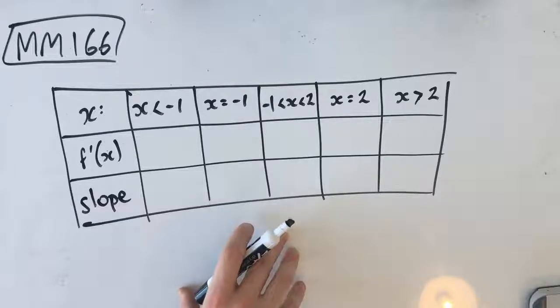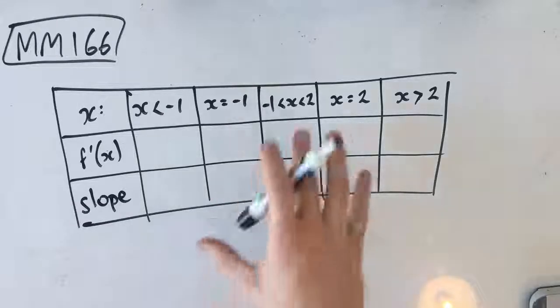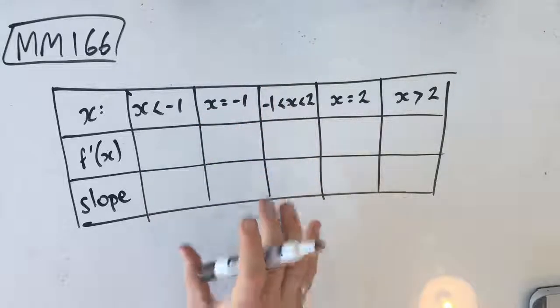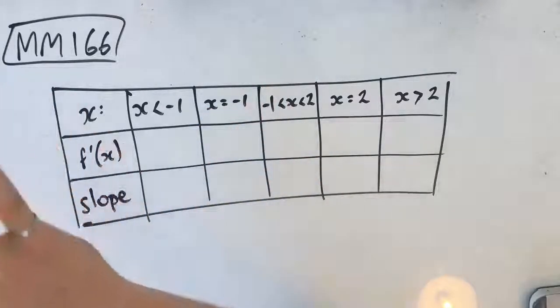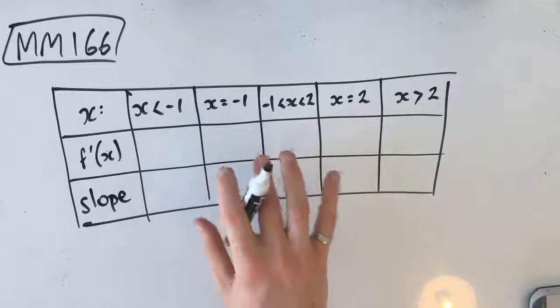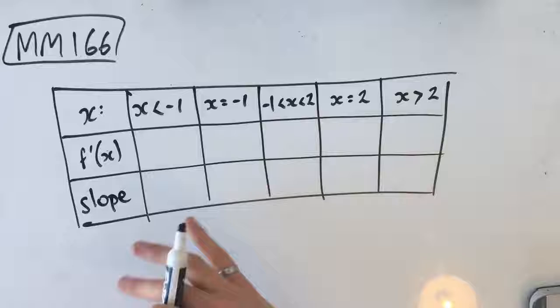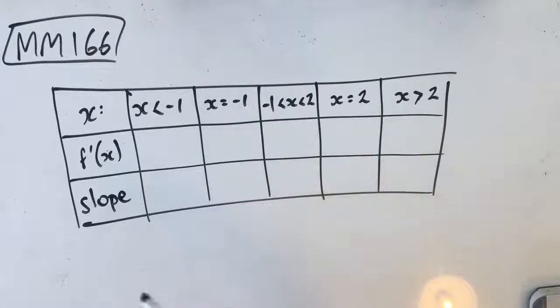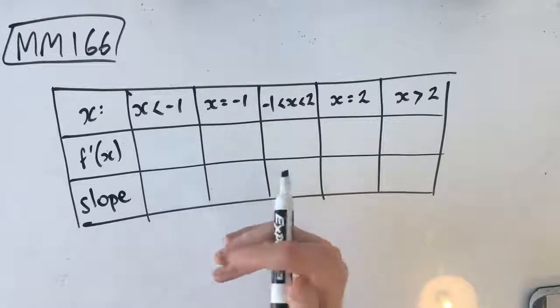So we know that, first of all, the best thing to do here is to draw a gradient table because all of these statements, f dash of x is less than 0 where x is less than negative 1, they get very confusing very quickly, and it's easiest to just use a gradient table to visualize this.